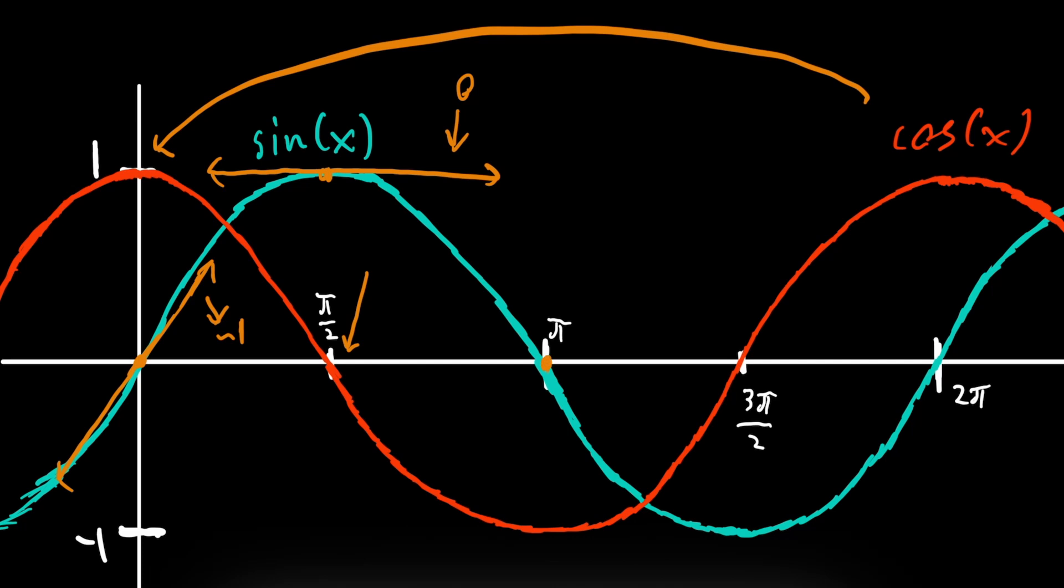And as a result, cosine of x is equal to zero at pi over two. Well, what about x is equal to pi? Let's draw another tangent line. That's a very terrible tangent line, but it will suffice. The slope of this line right here looks around negative one. And as a result, cosine of x at x is equal to pi is negative one.